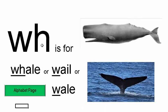WH — WHALE. There's a whale. This word is WHALE, as you might write it. That's how you write it properly.